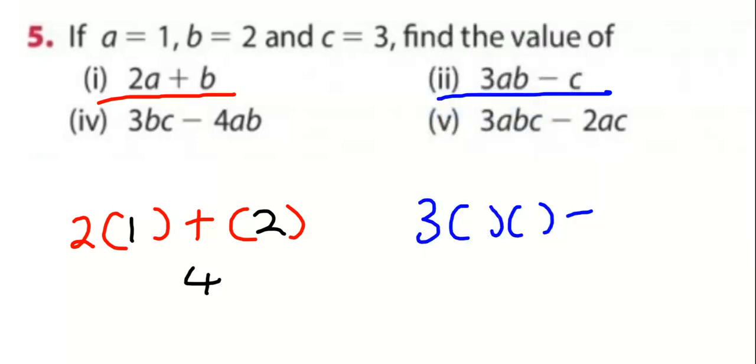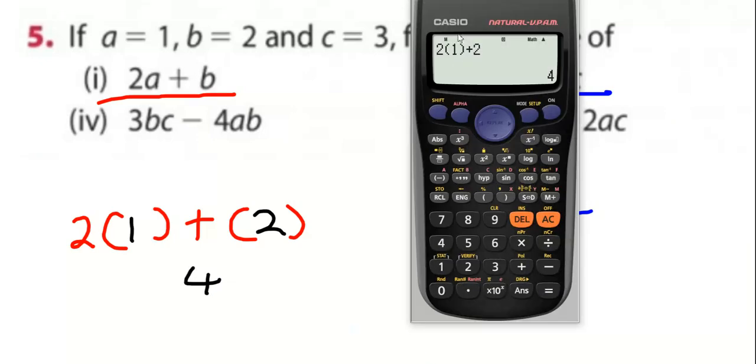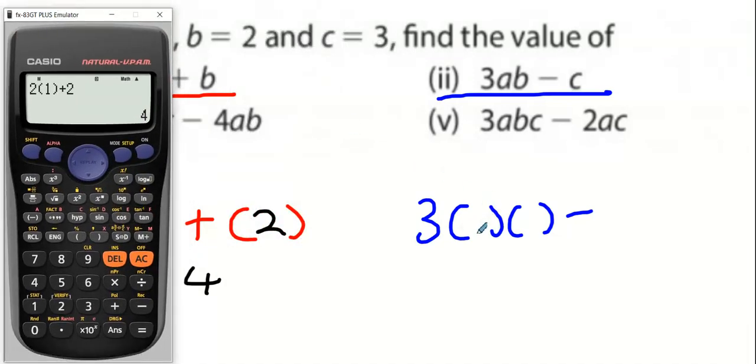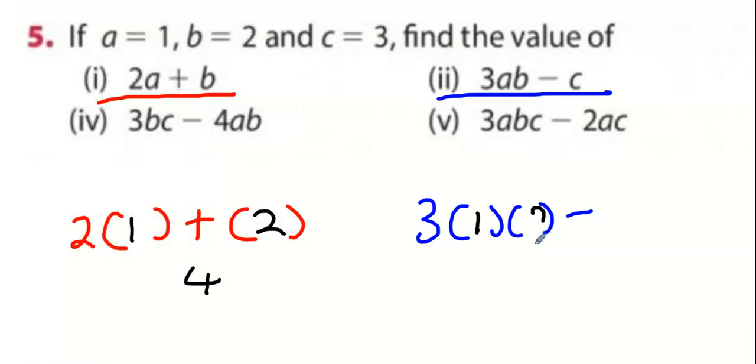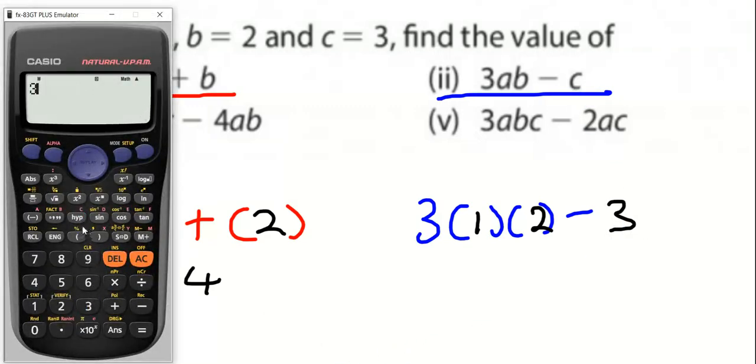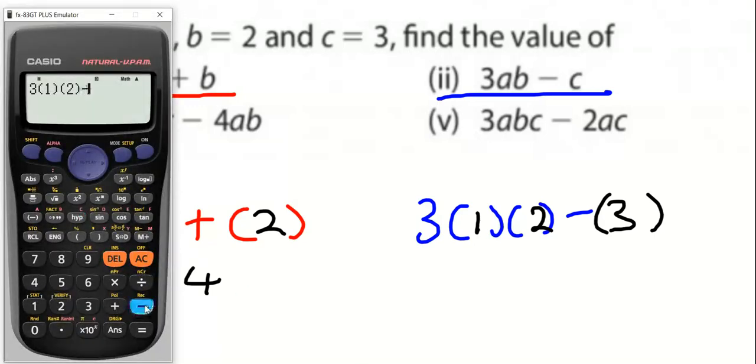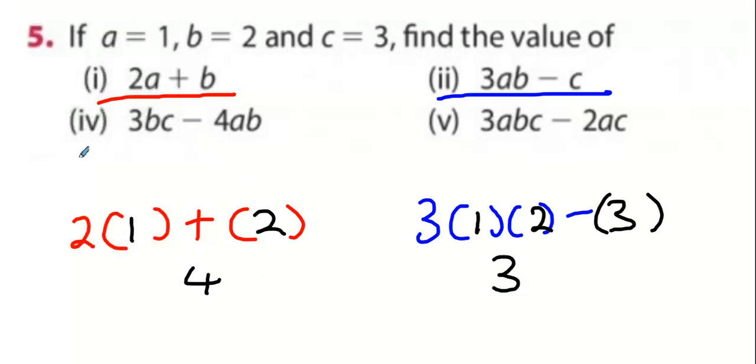And for the blue one, what do you do? You do A is one, B is two, and C is three. And you do three times one, take away three. And you get an answer of zero. Will you guys do four and five for me now?